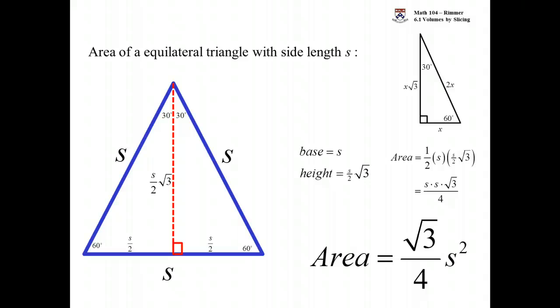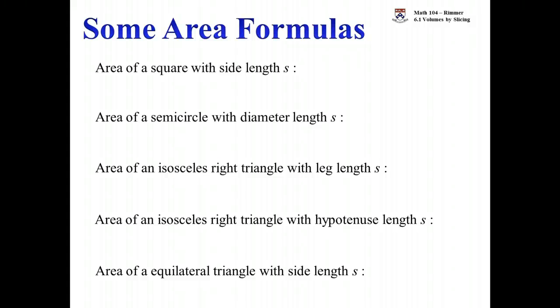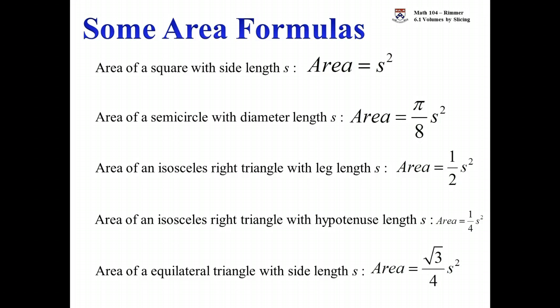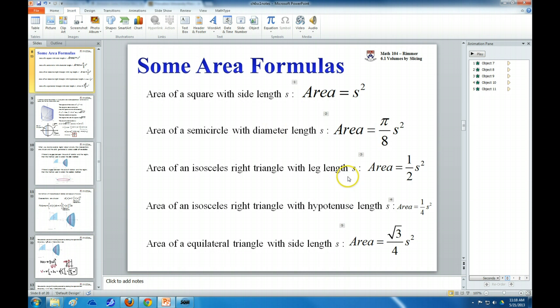Okay, so those are our formulas. There's more, I mean, but that's enough for now. And here's a summary page. When you have a square, it's going to be S squared. When you have a semicircle where the diameter is S, it's going to be pi over 8 S squared. Isosceles right triangle is just half of S squared. Isosceles right triangle where the hypotenuse is S, that's a fourth of S squared. And then finally, an equilateral triangle, that'll be root 3 over 4 S squared. And this will help us once we go and calculate volume using cross sections.